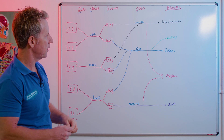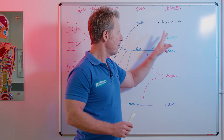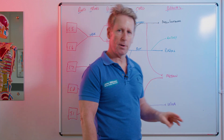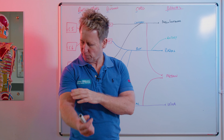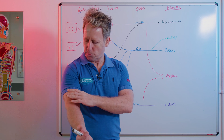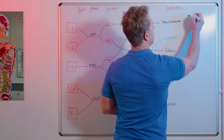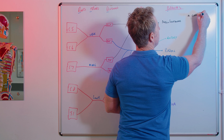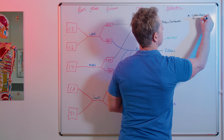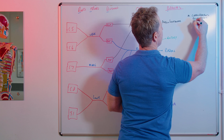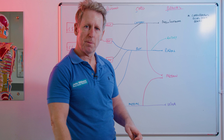Let's start with the musculocutaneous supply. For the motor supply, this nerve supplies three main muscles: the coracobrachialis, which goes from the coracoid process to the humerus; the biceps brachii; and the brachialis. So those are the three muscles that nerve supplies.